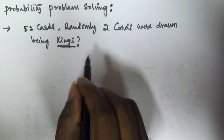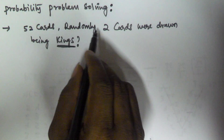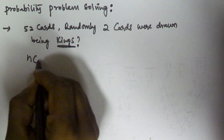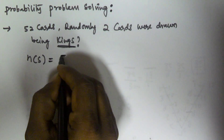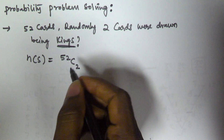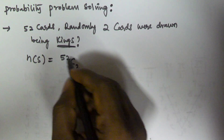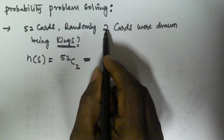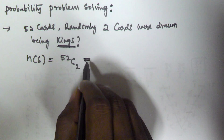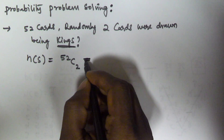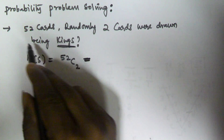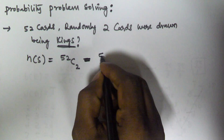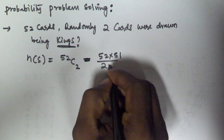From the 52 cards we are selecting 2 cards, so the sample space n(S) is going to contain 52C2 cases. In permutations and combinations, if you are selecting r elements from n elements, that is going to be nCr. Here n is 52 and r is 2, so that is going to be 52C2.